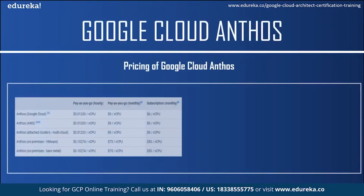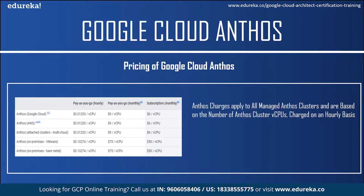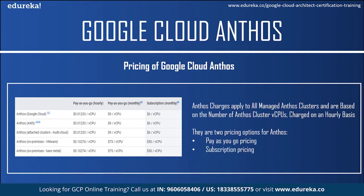Now let us take a look at the pricing of Anthos. Anthos charges apply to all managed Anthos clusters and are based on the number of virtual CPUs, charged on an hourly basis. There are two types of pricing options. The first is the pay-as-you-go pricing model, where you are billed for Anthos managed clusters as you use them — suitable if you want to try Anthos or use it infrequently. The next type is subscription pricing, which provides a discounted price for a committed term. Your monthly subscription covers all Anthos deployments irrespective of environment at their respective billing rates.